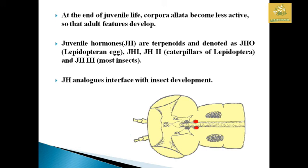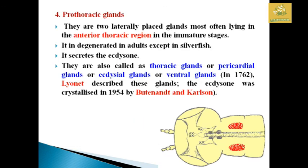JH1 interferes with insect development at each and every stage. The prothoracic glands are paired laterally placed glands lying in the anterior thoracic region in immature stages. They degenerate in adults, except in silverfish, which have different metamorphosis. The prothoracic gland secretes ecdysone, the molting hormone. They are also called thoracic gland, peritracheal gland, and ventral gland in different insects. This gland was described by Lyonet, and ecdysone was isolated in 1954 by Butenandt and Karlson.